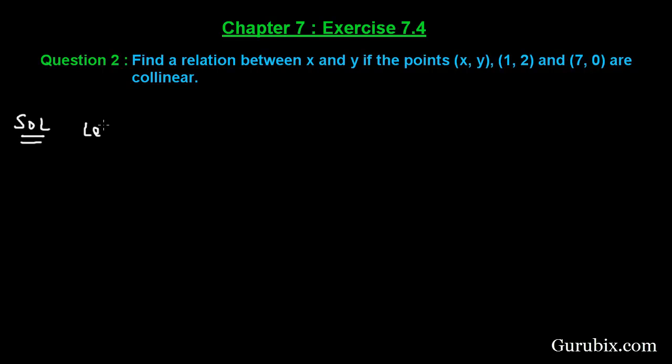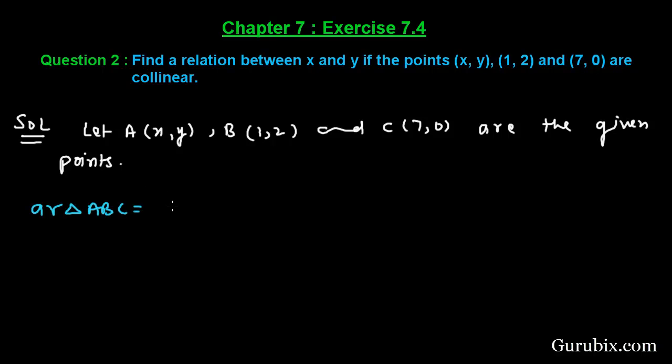Let A(x, y), B(1, 2) and C(7, 0) are the given points. Now we shall find the area of the triangle formed by these 3 points.